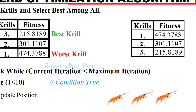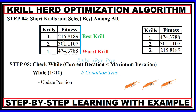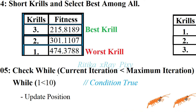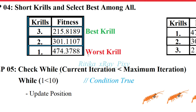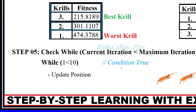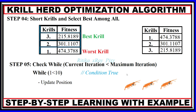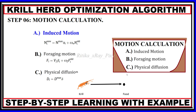In step 4, we sort the krills in ascending order. The initial fitness values are re-arranged, and we identify the best krill — the third krill has the minimum fitness value — and the worst, which is the first krill with the maximum value. In step 5, we check the stopping criteria: current iteration is 1, which is less than 10, so the condition is true.